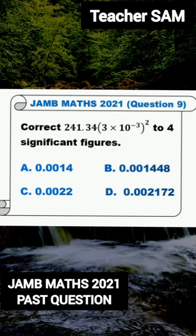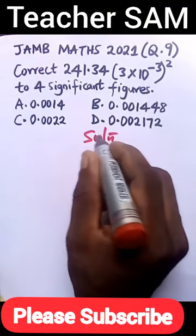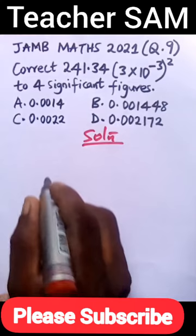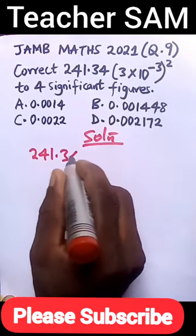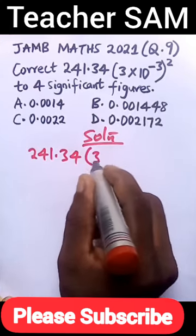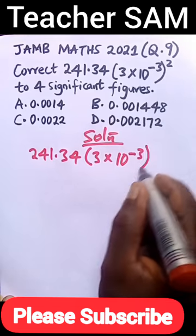Correct 241.34 times (3 × 10^-3)^2 to 4 significant figures. Let's go ahead and solve this quickly. We are given 241.34 times 3 × 10^-3, all raised to the power 2.